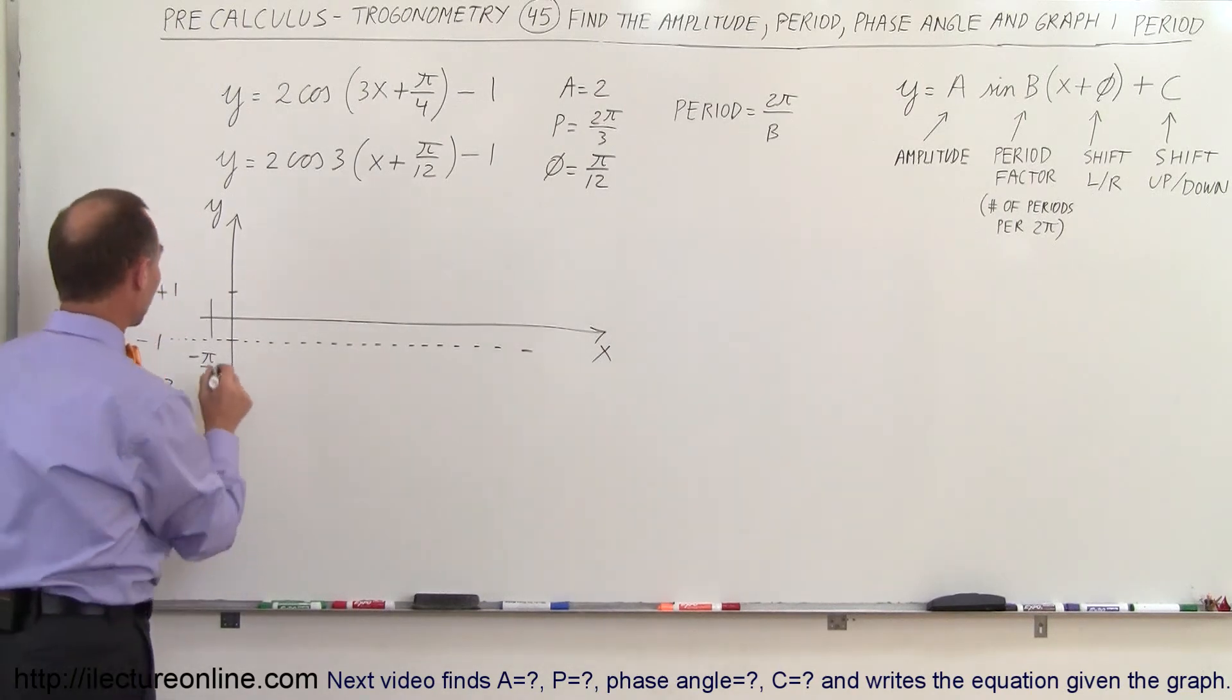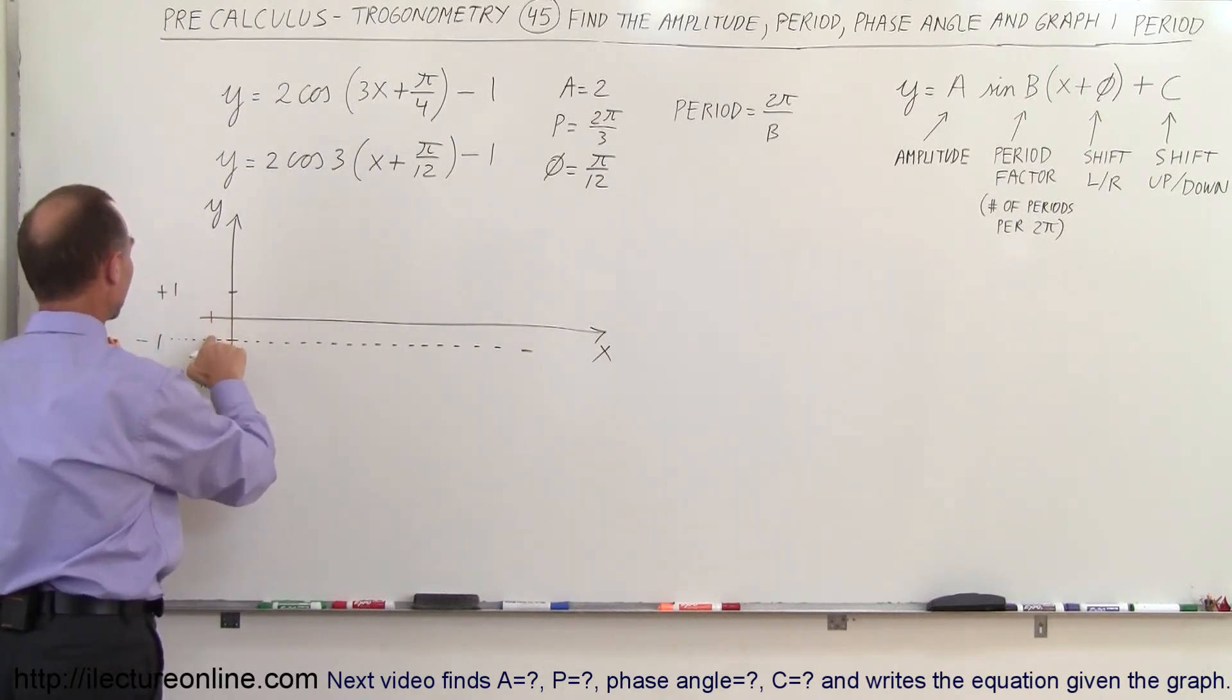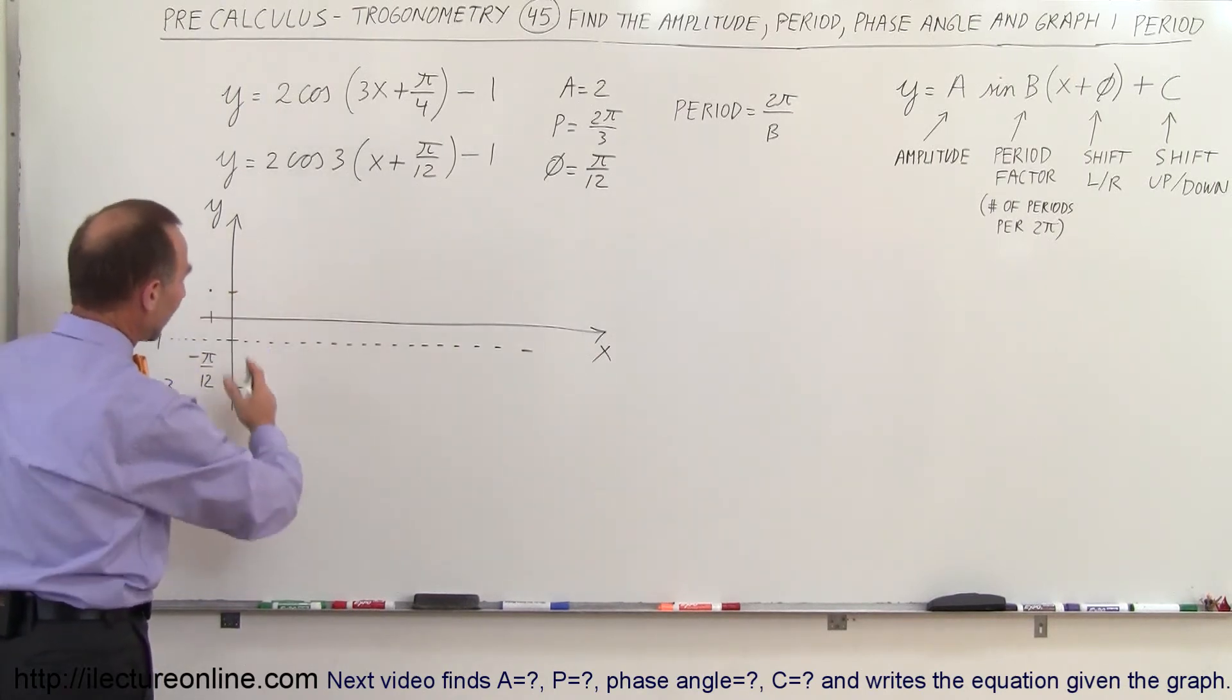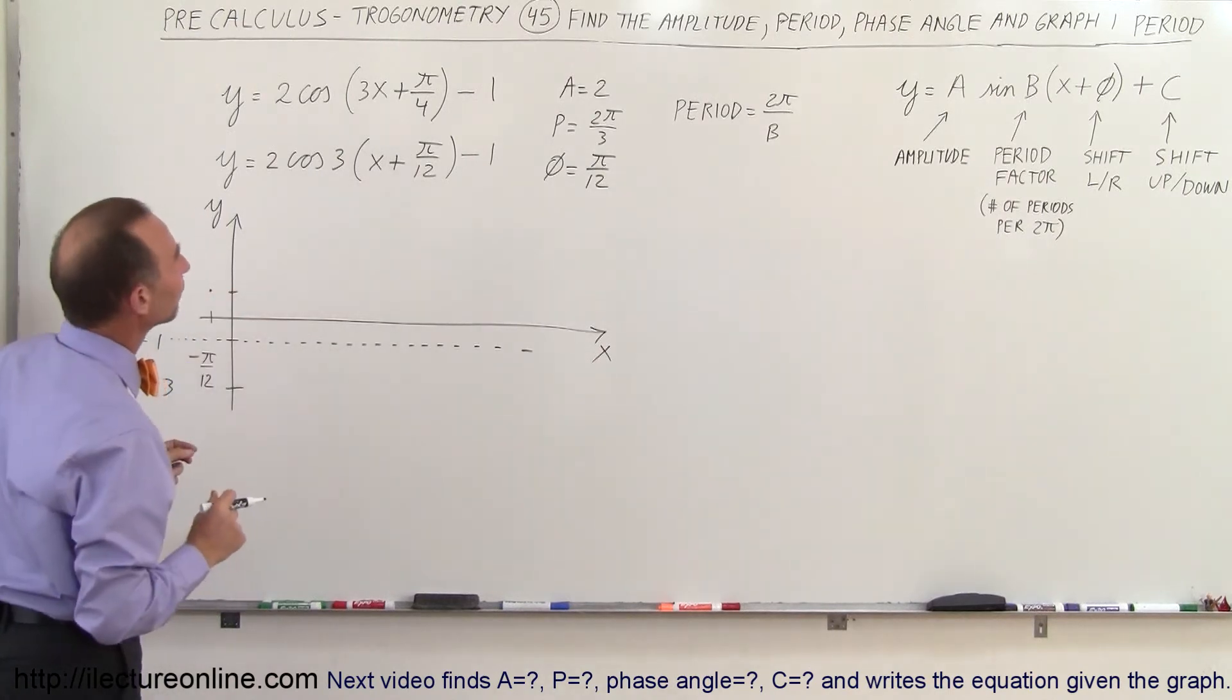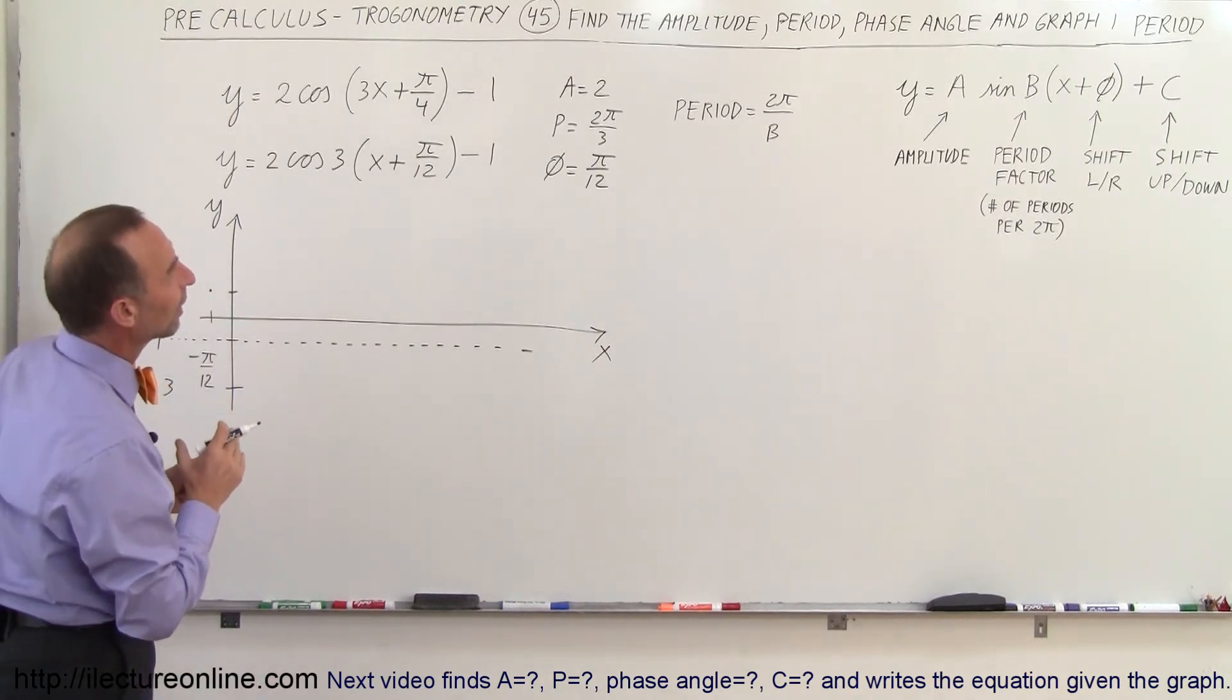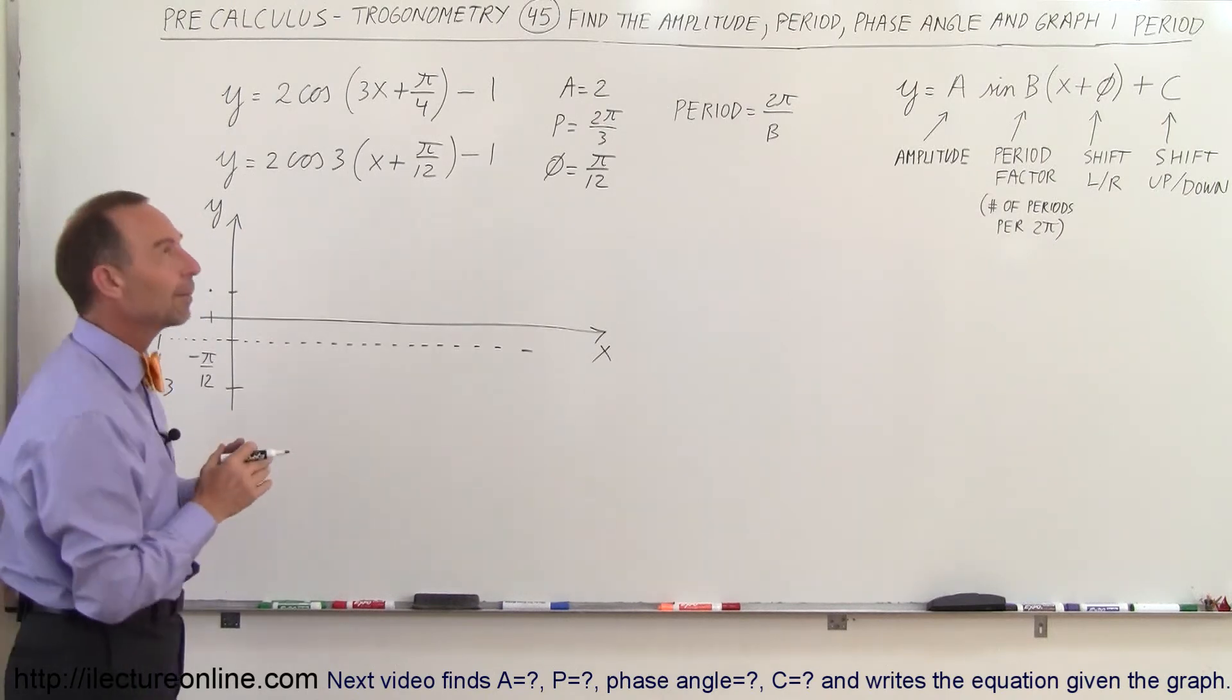So the cosine function will start at its maximum value and I made this a little bit too long, maximum value at this point right here and then we have a complete function like that so it will look, let's see here the period is 2π divided by 3.